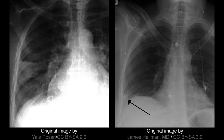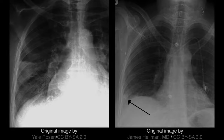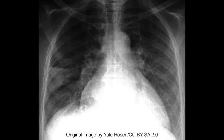The plain radiograph of a patient with a pulmonary infarction can be deceivingly normal, without any striking abnormality identifiable. In this x-ray, we can see a sign that is known as Hampton's hump.